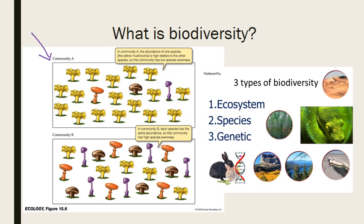We can also look at biodiversity in terms of the level of diversity — the biodiversity of the ecosystem, the number of species, and the genetics of the species. Ecosystem biodiversity looks at the number and type of ecosystems available in an area that are considered healthy. Species biodiversity is a measure of the number of species present, and genetic biodiversity is a measure of the genetic variability within the organisms in a particular species.